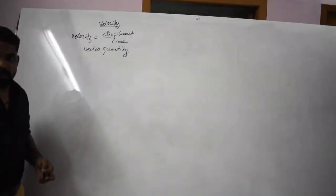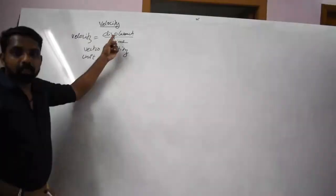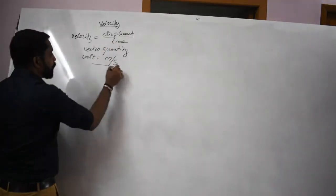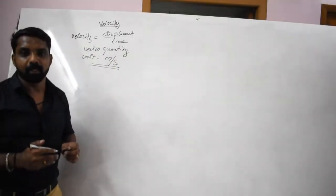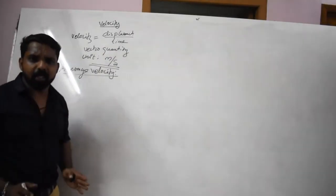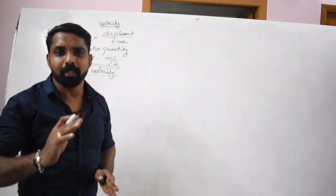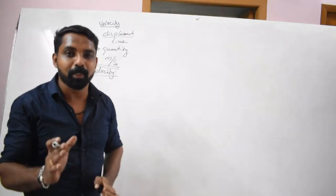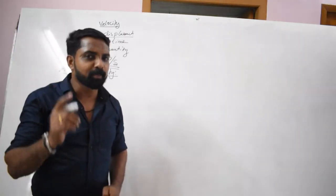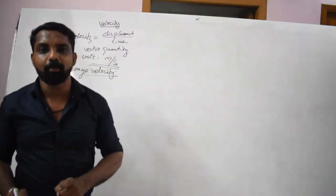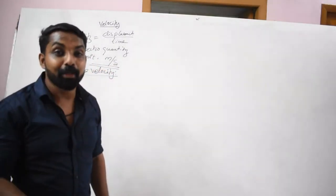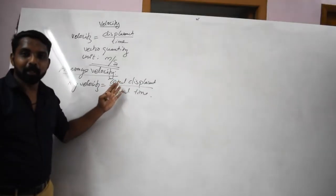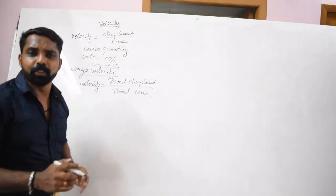This is a vector quantity. Displacement unit is meter, time unit is second, so the unit is meter per second. Next topic is average velocity. Average speed is total distance by total time. Average velocity is total displacement by total time.